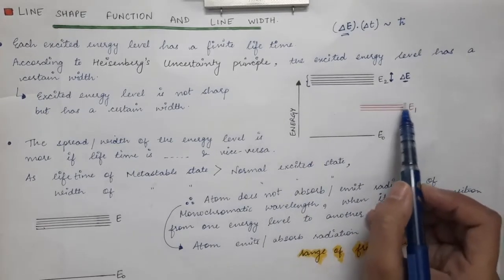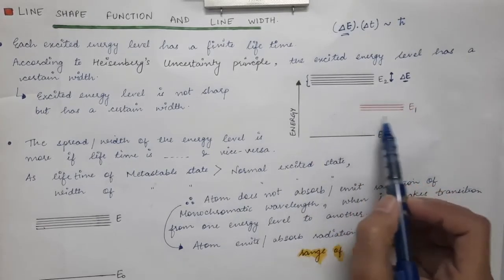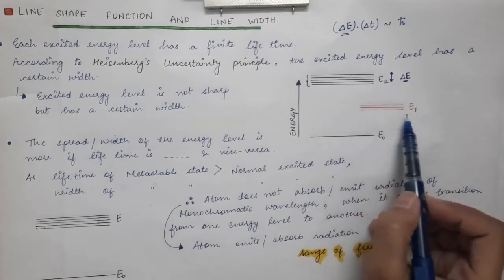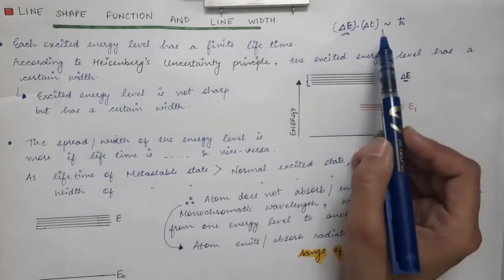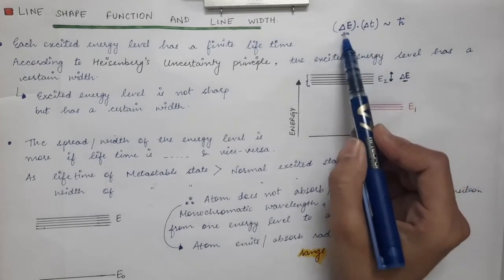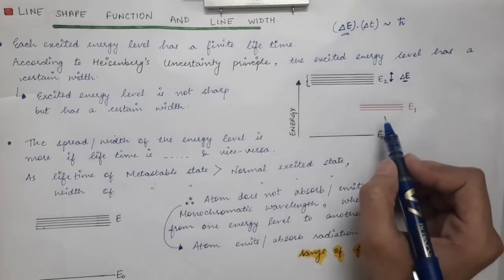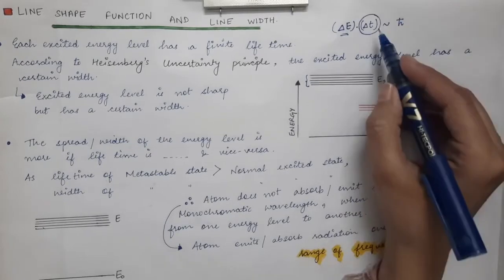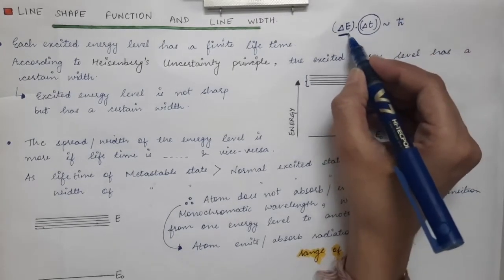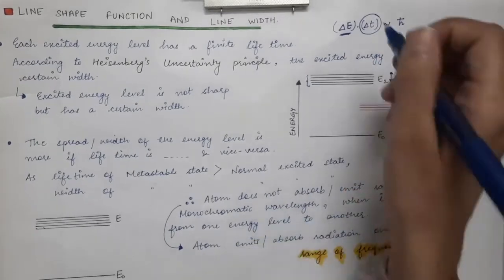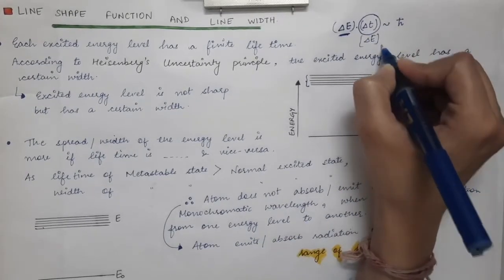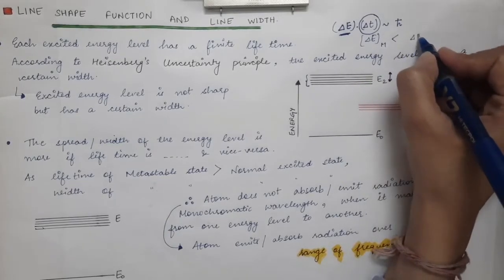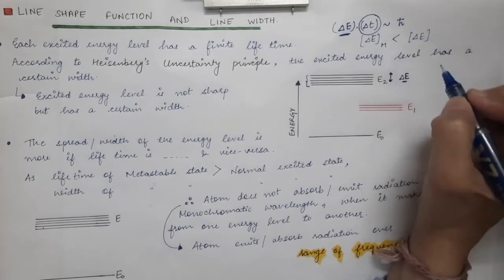The same applies to the metastable state. For the metastable state with energy E1, due to its lifetime there is also an uncertainty in energy. However, when you solve for delta E for the metastable state, it comes out to be very less as compared to delta E for the normal excited state.